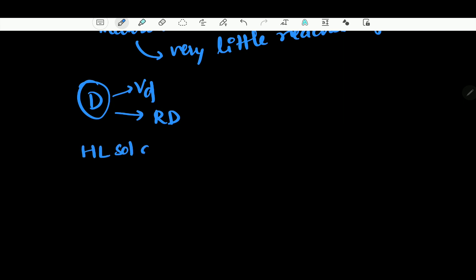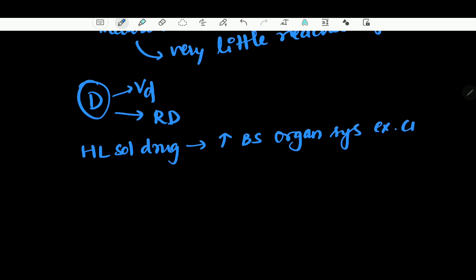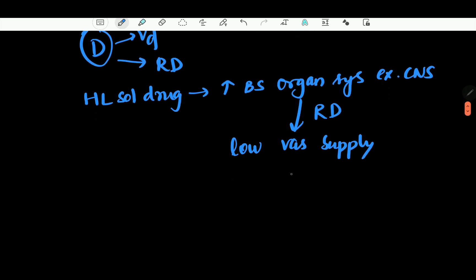First, Thiopental goes to high-blood-supply organ systems — for example, the CNS. But if you look at the half-life, you will be redistributed to areas of low vascular supply like fat. This is a characteristic feature of barbiturates.